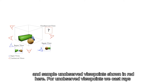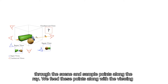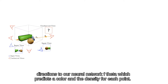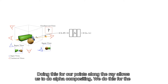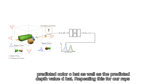For a sampled unobserved viewpoint, we cast rays through the scene and sample points along the ray. We feed these points along with the viewing directions to our neural network Fθ, which predicts the color and the density for each point. Doing this for all points along the ray allows us to do alpha compositing. We do this for the predicted color ĉ, as well as the predicted depth value d̂.